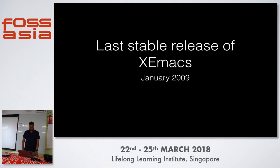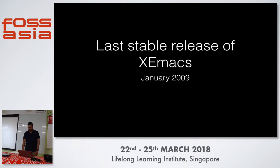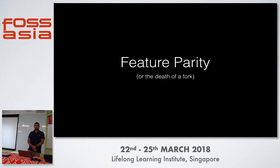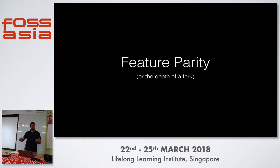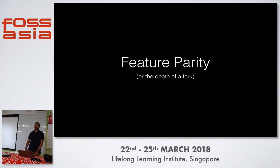The last stable release of XEmacs came out in January 2009. They always thought there would be a need for compatibility at the Lisp level — Lisp is the language inside Emacs used for third-party packages. It turns out the reason a fork disappears is you end up getting feature parity. Once Emacs had feature parity with everything XEmacs had, they realized there was probably not much reason for XEmacs to continue development. That stopped in December 2015, and today the xemacs.org domain doesn't even resolve.